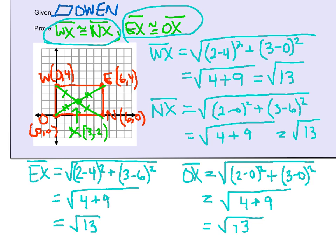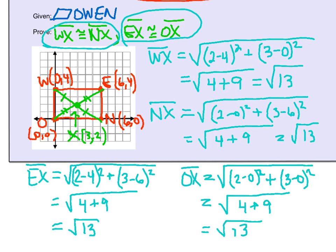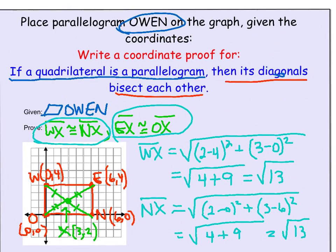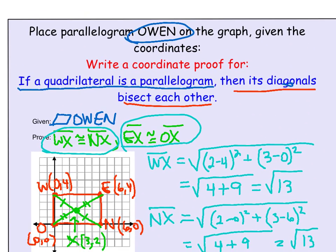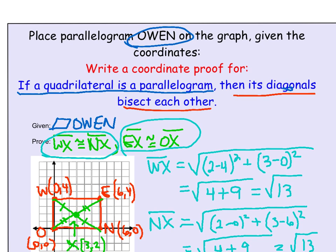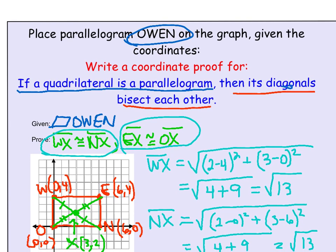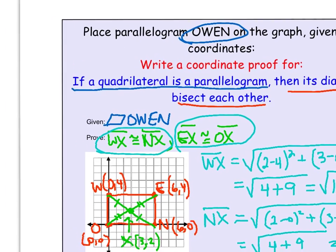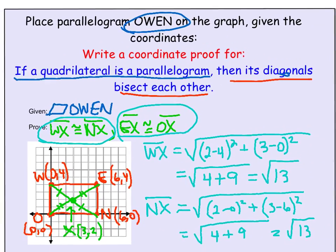The final thing to do is write a conclusion. We can conclude that since Owen is a parallelogram, the diagonals do, in fact, bisect each other.